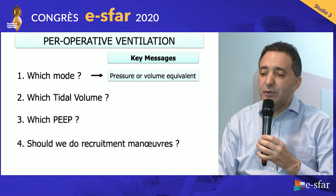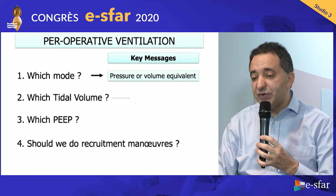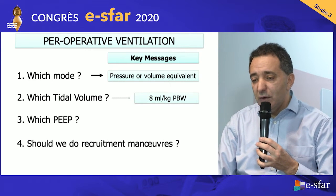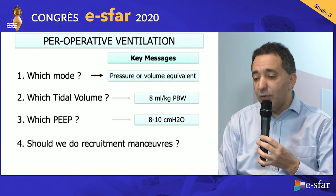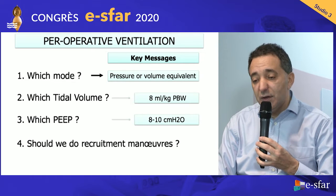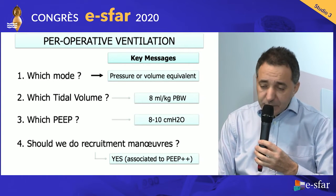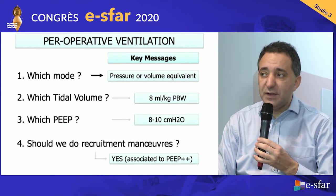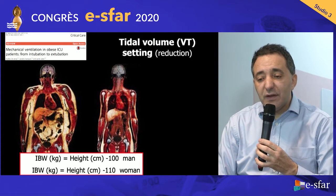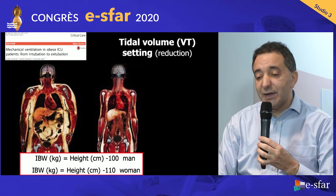If you use pressure mode, be careful — you must monitor tidal volume. If you use volume mode, monitor the pressure, mainly plateau pressure. Recommended tidal volume is 6 to 8, with 7 to 8 mL/kg of predicted body weight being a good target, and PEEP of 8 to 10 cmH₂O. Some patients may require an individualized strategy for drugs, hemodynamics, and ventilation. Recruitment maneuvers should be considered each time there is hypoxemia, but must be performed safely only in non-hypovolemic patients.